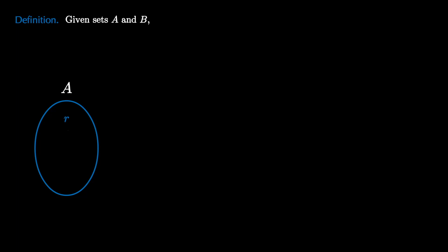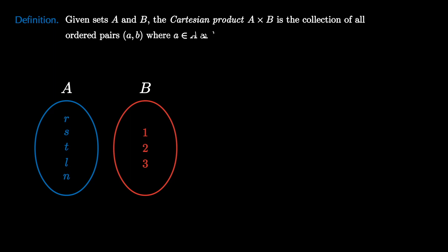Let's finish this video with a final method of creating a new set from two sets, known as the Cartesian product. Given two sets A and B, which we'll show here as ellipses, we create the Cartesian product A times B as the collection of all ordered pairs of the form a comma b where a is in A and b is in B.